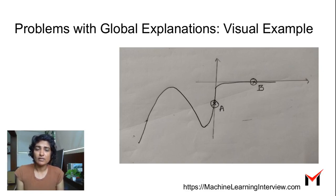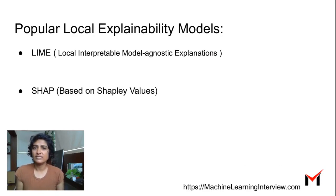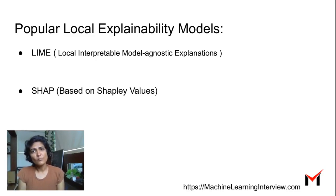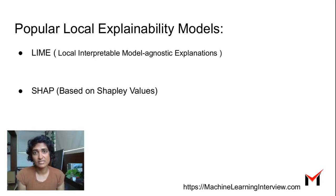So sometimes a global fit is not great and you need to consider more local approaches for explaining specific outcomes for data points. That is what we mean by local explainability: given a specific data point, what are the different features contributing to the prediction for that data point? Popular models for local interpretability are LIME — Local Interpretable Model-Agnostic Explanations — and SHAP, which is based on Shapley values. Both are available as Python libraries and we will look at each in more detail in other videos.